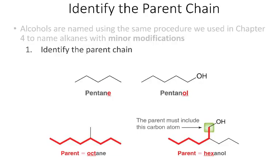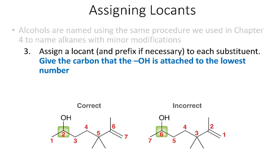The big difference in alcohol nomenclature is the suffix. A five-carbon chain is pentane; with an OH group it becomes pentanol. When determining the main chain, remember the parent chain must contain the OH group. So if the OH is on a branch, the longest chain including the OH might only be six carbons — making it hexanol rather than octanol. When numbering, the OH gets the lowest number possible, and it gets priority over double bonds and triple bonds.